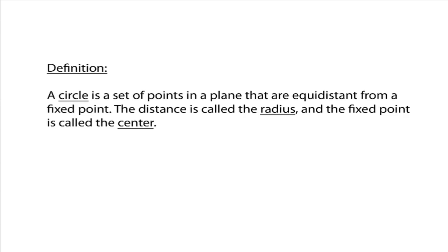The first conic section we're going to talk about is a circle. The formal definition of a circle is as follows: a circle is a set of points in a plane that are equidistant from a fixed point. This distance is called the radius, and the fixed point is called the center.